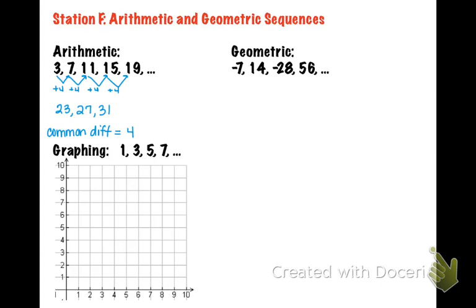This second one is an example of a geometric sequence because instead of adding or subtracting the same every time, we're multiplying by the same thing every time.